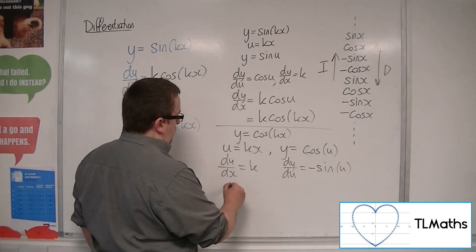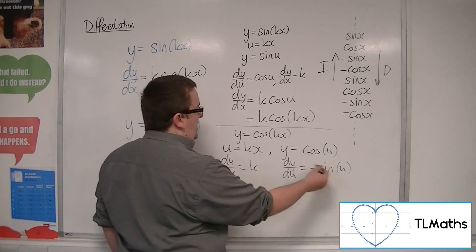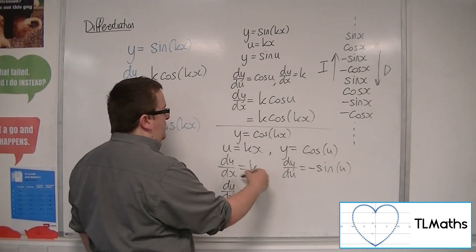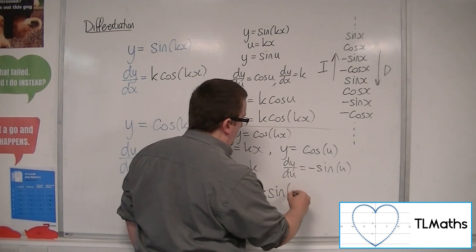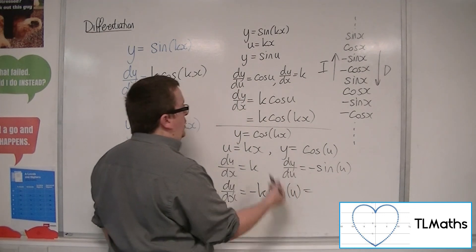So dy by dx is dy by du times du by dx. So minus k sine of u. And u was kx.